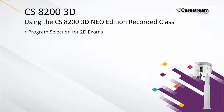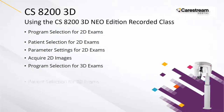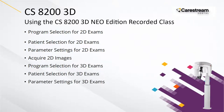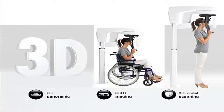This recorded class is designed for clinical team members and demonstrates how to acquire images using the new CS8200 3D Neo Edition system. The CS8200 3D Neo Edition imaging system is designed to capture 2D panoramic images, 3D CBCT images, cephalometric images, and 3D model scanning images.